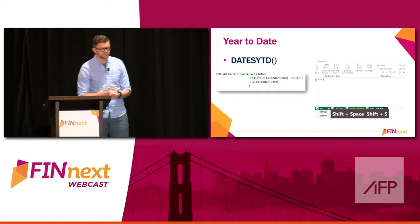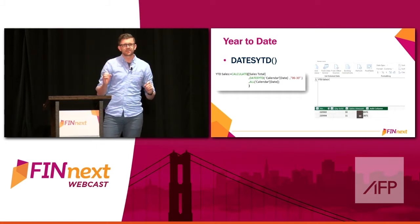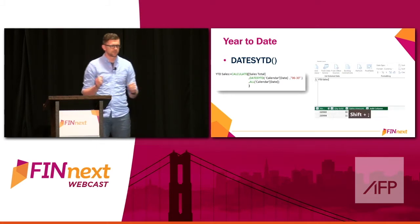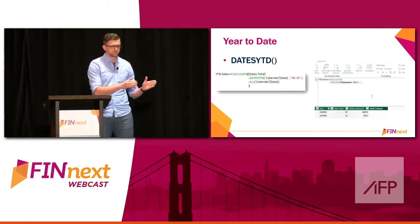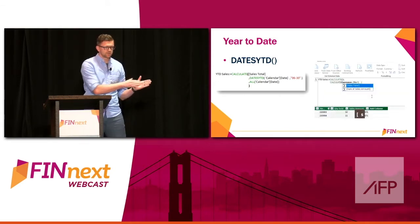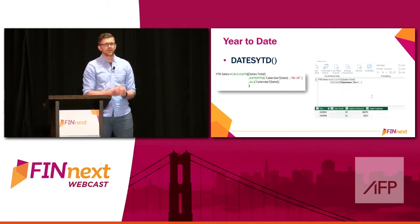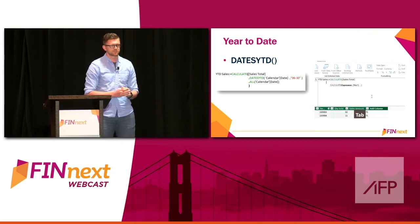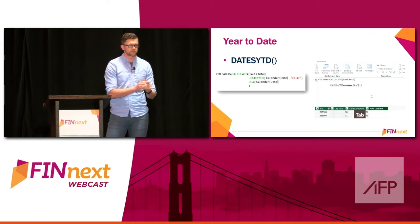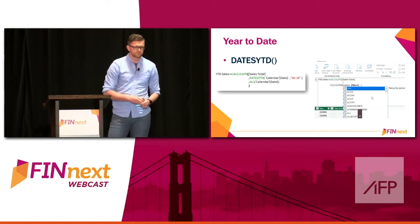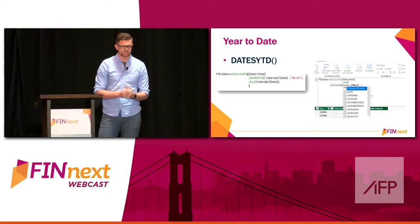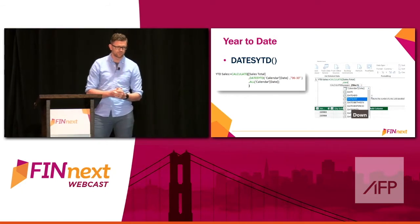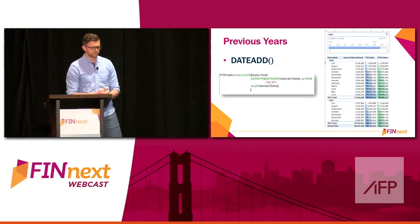I'm going to do a year-to-date calculation, which is very hard in basic Excel. We're going to take a sales total and tell it to take the whole year-to-date using a customized fiscal year-end of June 30th. And you can see it works very easily — it selects the fields for you and it's very smooth.